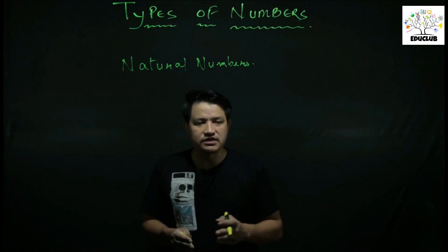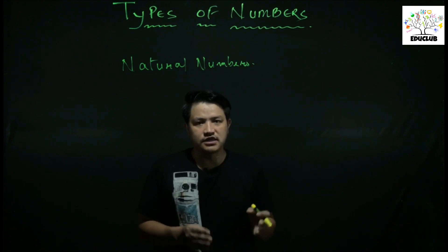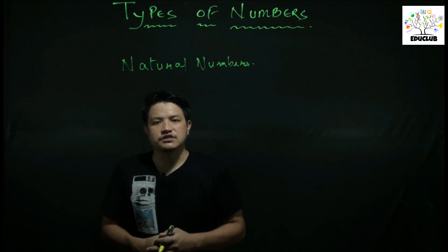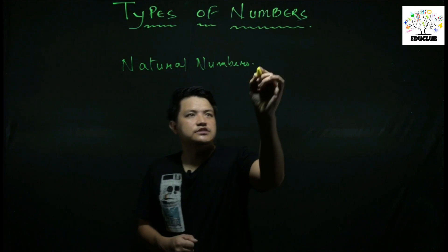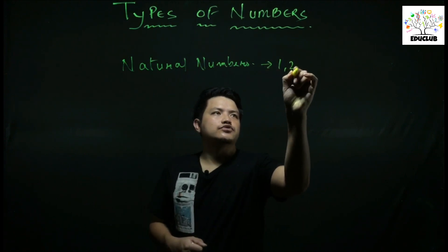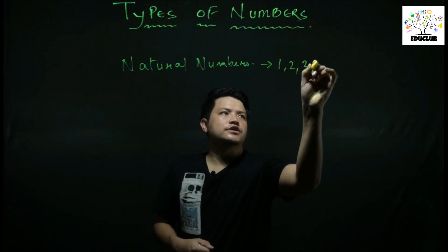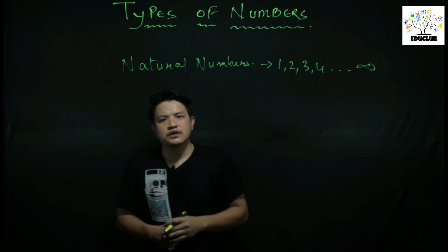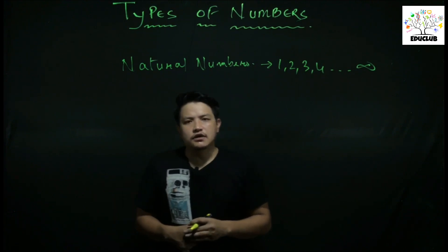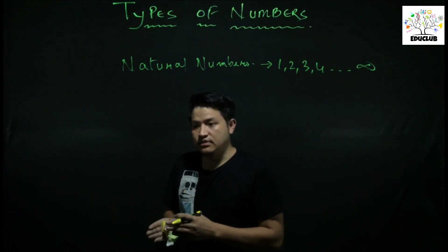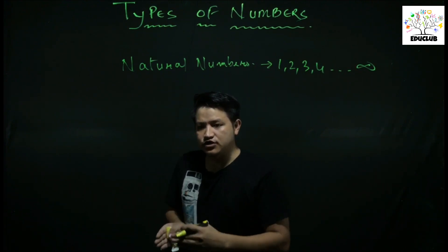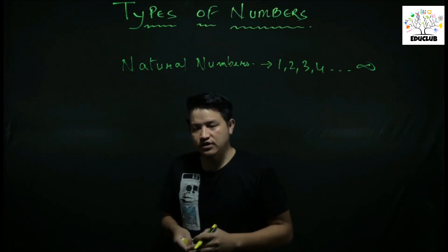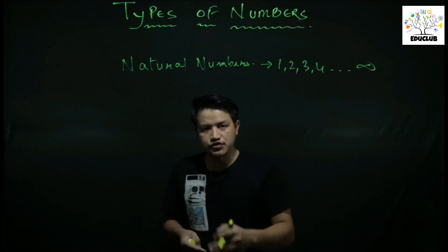Natural Numbers are all the counting numbers. The set of Natural Numbers consists of counting numbers: 1, 2, 3, 4, and so on.